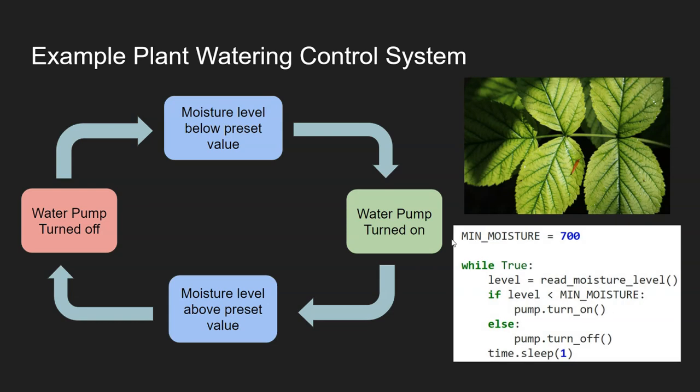In Python on a microcontroller like the micro:bit, you might write code like this: set a minimum value of 700, then in a loop read the moisture level, compare it to the minimum level, and either turn the pump on or turn the pump off. You'd normally add a sleep delay — a second, a minute, or even an hour depending on the application.